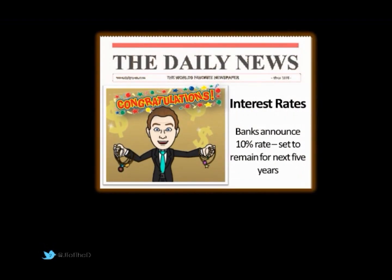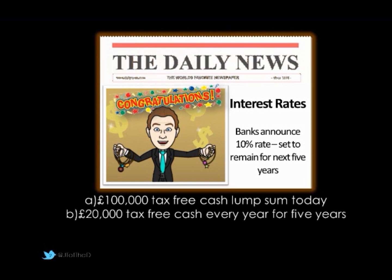You may have seen this often in the newspapers and magazines — someone's gone to a competition and it's for quite a sizable lump sum of money. They've got several options of how they could have this money given to them. The first option is to take £100,000 as a tax-free lump sum today. The second option is to break this into five equal instalments of £20,000, starting with the first one today and then every year moving forward.